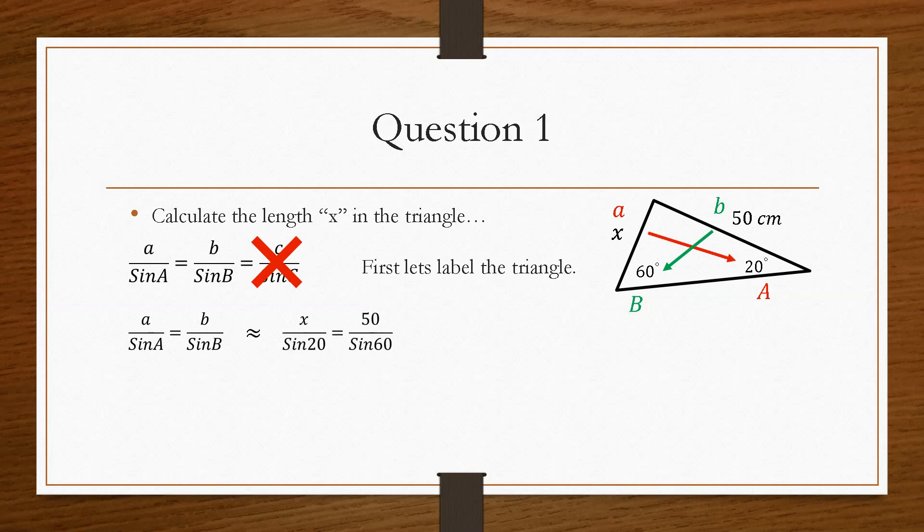Once we have labelled our triangle, all we have to do is substitute in the values. If we simplify 50 over sine 60, that gives us 57.735. I'm keeping it to three decimal places because we can round it later. Then I'll bring the sine 20 across. Because it is dividing here, it's going to go over as times. If we pop that into the calculator, we get a value of 19.7. The rest of the values in the question are all to the nearest whole number, so we'll round this to x equals 20 centimeters. And that's how you find the length using the sine rule.